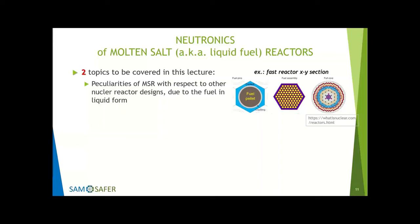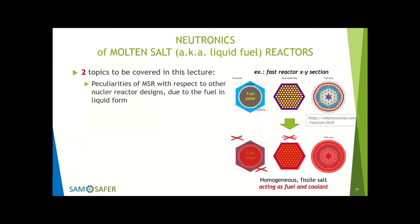In a standard reactor you have the fuel pellet, the cladding, it is surrounded by the coolant, the fuel pellets constitute the fuel pin and fuel assembly, and many fuel assemblies constitute the core. In a molten salt reactor, there is no fuel pellet, no fuel fabrication, no cladding, no separate coolant — because the fissile fuel acts as fuel and coolant at the same time. You have a liquid with internal heat generation, so there is no fuel pin, no fuel assembly — just a fuel core filled with fissile salt.